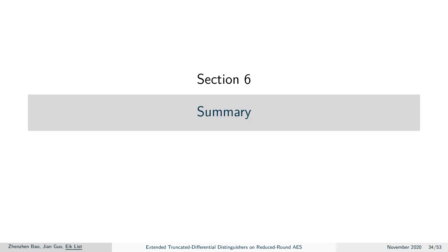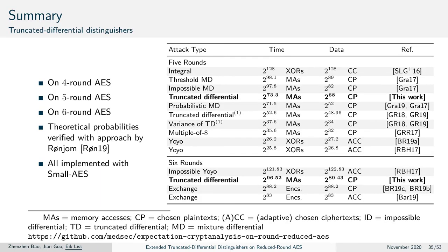To sum up: we started from Patarin's sum of permutations and approximated the MixColumns operation at the end of the three-round integral distinguisher as a sum of four independent permutations. We derived a four-round truncated differential distinguisher, extended it to five rounds by considering multiple output cells, and showed a key recovery on six rounds. Moreover, we showed that considering all pairs in a diagonal structure yields a distinguisher on six rounds with a tiny advantage. We cross-verified our theoretical distinguishers with the proof method by Grassi-Rechberger and the differential propagation matrices by Rögnio. All experiments were implemented with Small AES, with publicly available code.